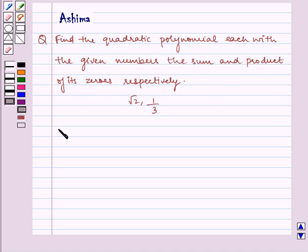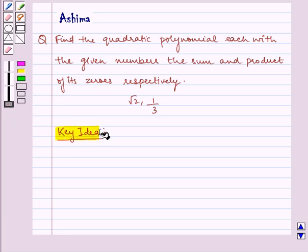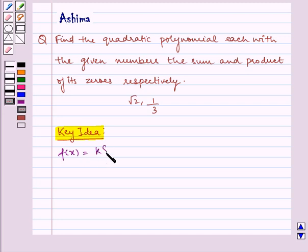Let us understand the key idea first. First, we know that a quadratic polynomial when the sum and product of its zeros are given is given by f of x is equal to k into x square minus sum of zeros into x plus product of zeros.